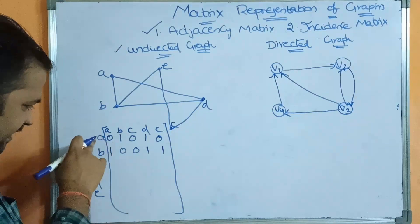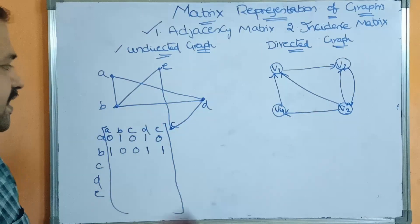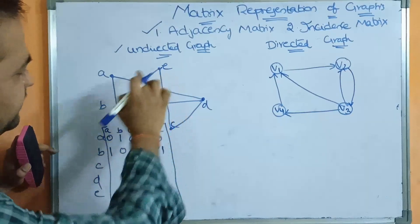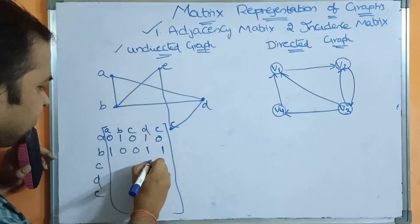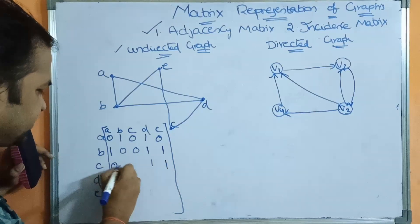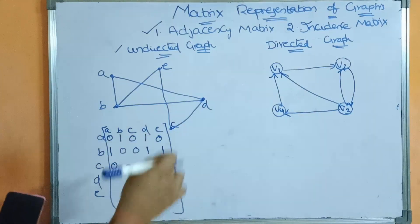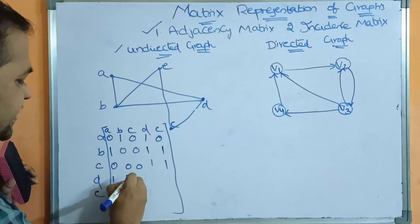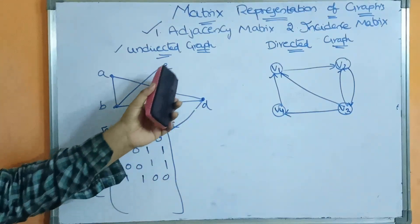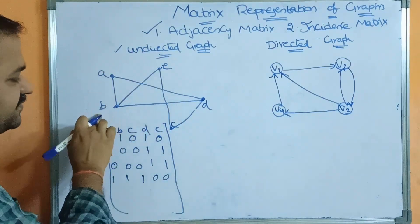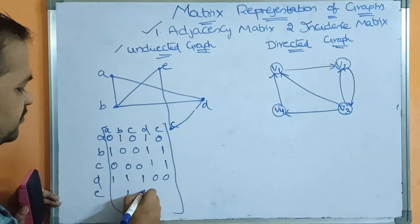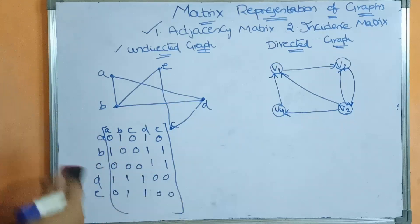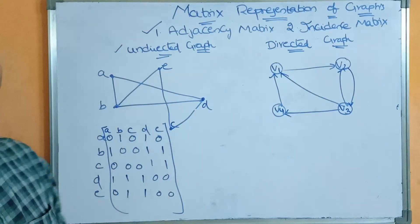Here rows and columns are nothing but the vertices. If we consider C, C is associated with two edges: C-D and C-E, so value 1. Remaining three values are 0. If we consider D, D is associated with three edges: D-A, D-B, D-C, remaining values 0. If we consider E, E is associated with two edges: E-B and E-C, so E-B value 1, E-C value 1, remaining two values 0. This is the adjacency matrix for undirected graph.